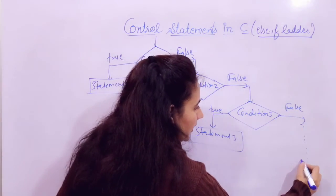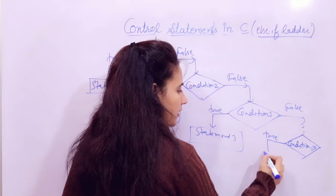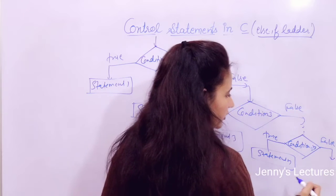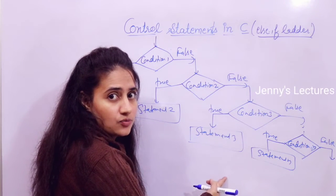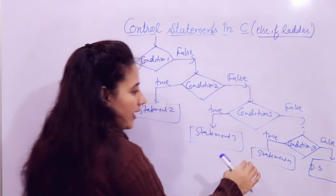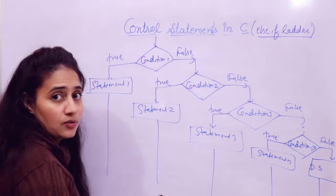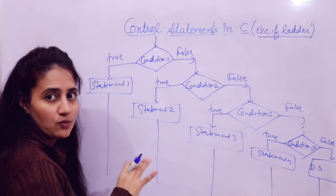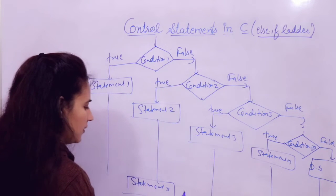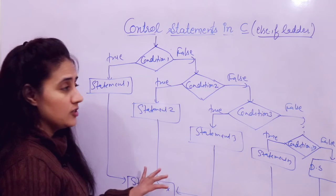At last we have condition N. If condition N is true, statement N would be executed. If condition N is also false, then the else block would be executed — we have written a default statement there. After execution of any statement — statement 1, 2, 3, N, or even after the default — the control goes to statement X, because that is part of the program and not part of the else-if ladder.